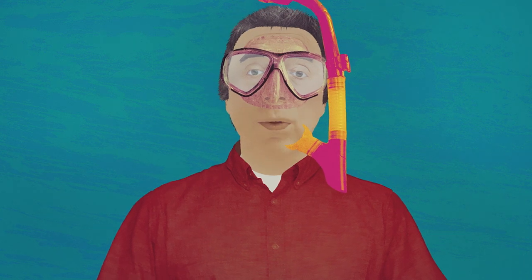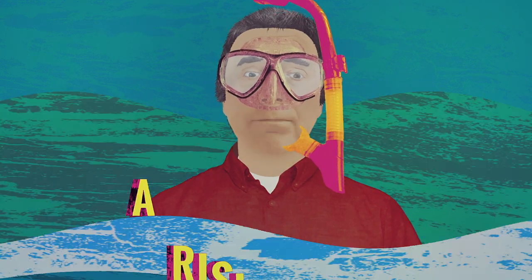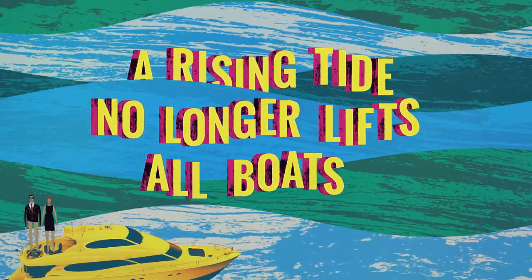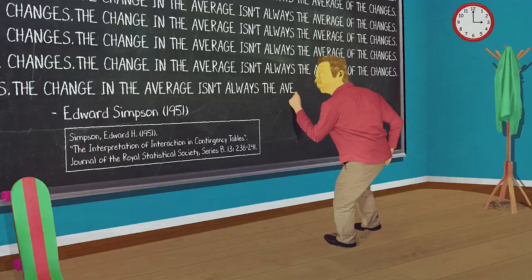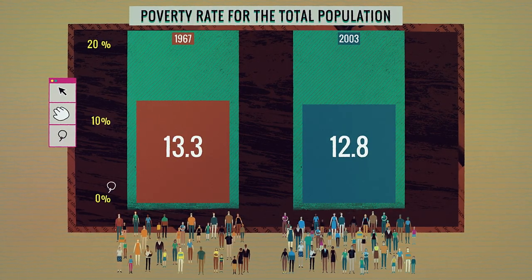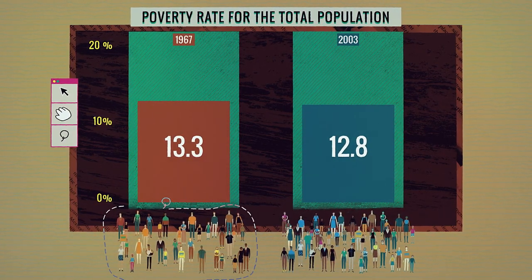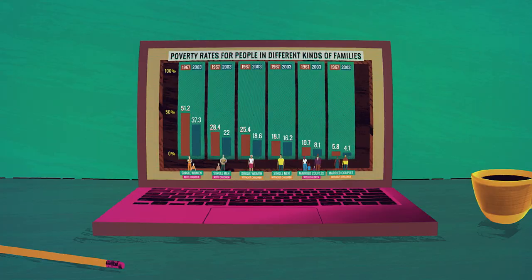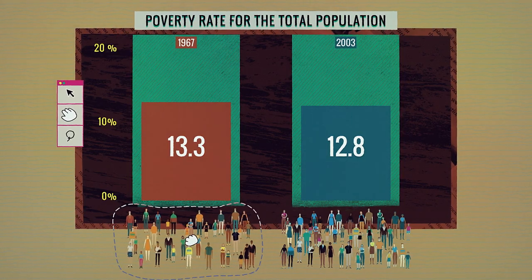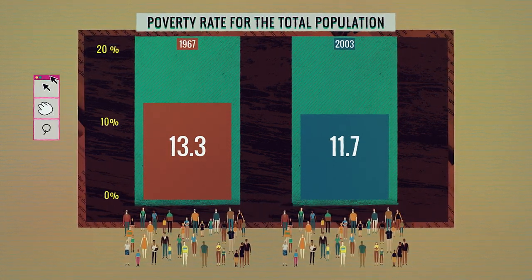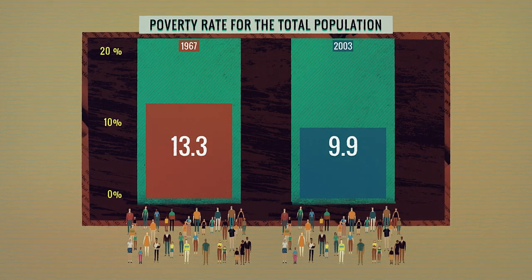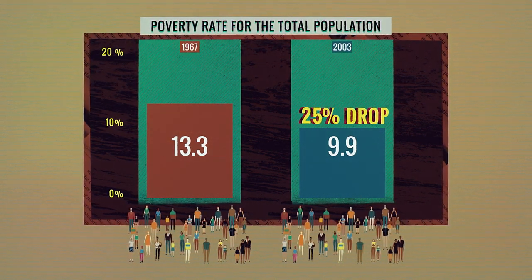You'd be tempted to conclude that a growing U.S. economy no longer helps the poor — that a rising tide no longer lifts all boats, and the rich get all the gains from economic growth. But remember Simpson's Paradox. Let's try to isolate the impact of the economy on poverty by holding family structure constant. If family structure hadn't changed, and if poverty rates by family type still fell by the rates they actually did between 1967 and 2003, the poverty rate in 2003 would have been 9.9% — that's a 25% decrease.